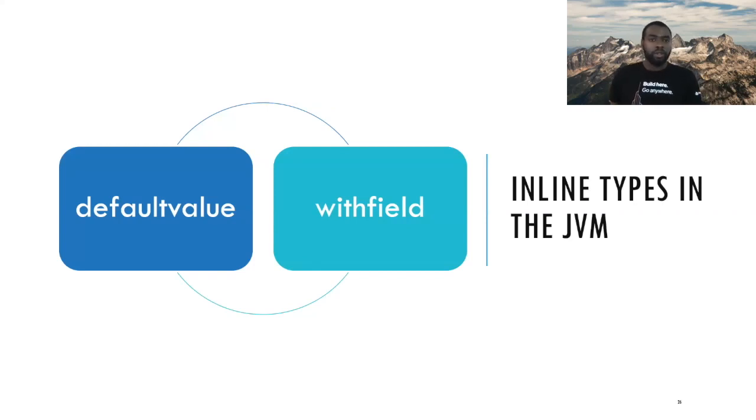With inline types there are two new bytecodes introduced. The first is default value. This is a lot like the new bytecode for creating identity types. Default value creates an inline type and sets all the fields to zero. So all primitives are zero, all references are null. And default value always produces an instantiated, an initialized instance. So unlike the new bytecode where you have to do the new dupe init sequence, default value is sufficient to create an initialized instance of a value type.